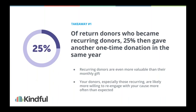The first big takeaway: of return donors who came back and gave again, 25% of them gave an additional one-time donation after already having an active recurring gift in the same year. To break that down — if a supporter signed up to be a recurring donor, giving every single month, 25% of that entire group came back and gave an additional one-time gift on top of their already active recurring donation.